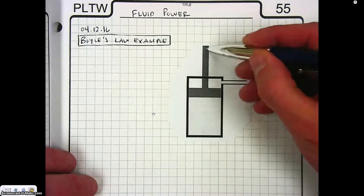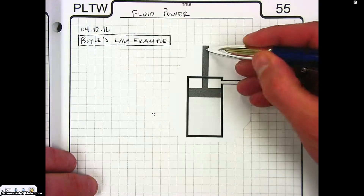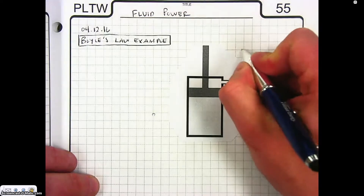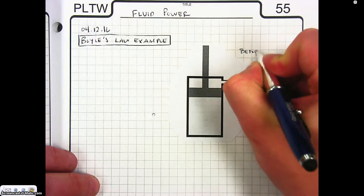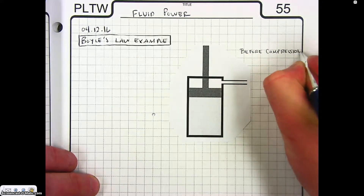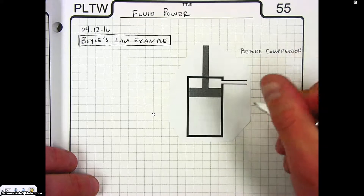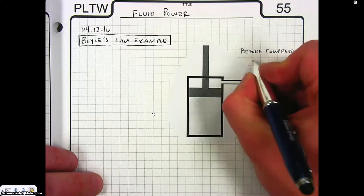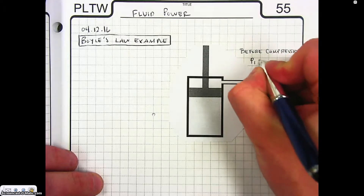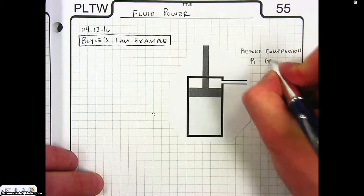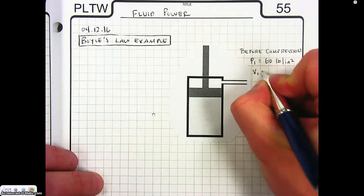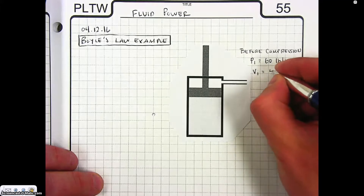We have a cylinder and a plunger in the cylinder, and we're going to do some labeling. Before compression, we're going to say that our cylinder has a pressure — call that P1 — of 60 pounds per square inch. And we're going to say that it has a volume before it's compressed of 40 cubic inches.